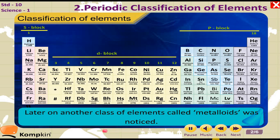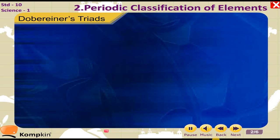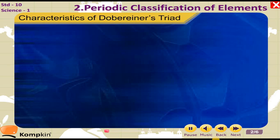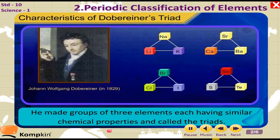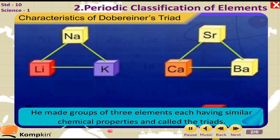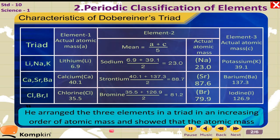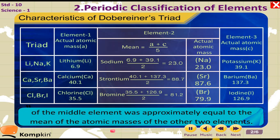Later on, another class of elements called metalloids was noticed. Döbereiner's Triads: A German scientist Döbereiner suggested that properties of elements are related to their atomic masses. He made groups of three elements, each having similar chemical properties, and called them triads. He arranged the three elements in a triad in increasing order of atomic mass and showed that the atomic mass of the middle element was approximately equal to the mean of the atomic masses of the other two elements.